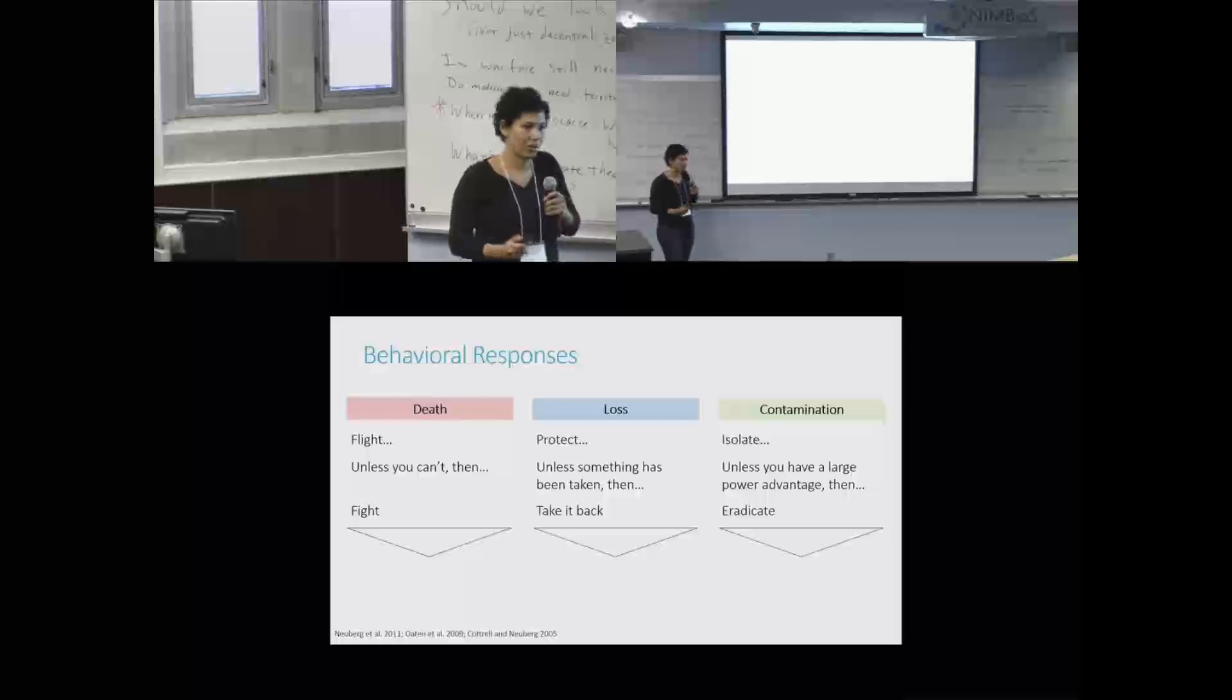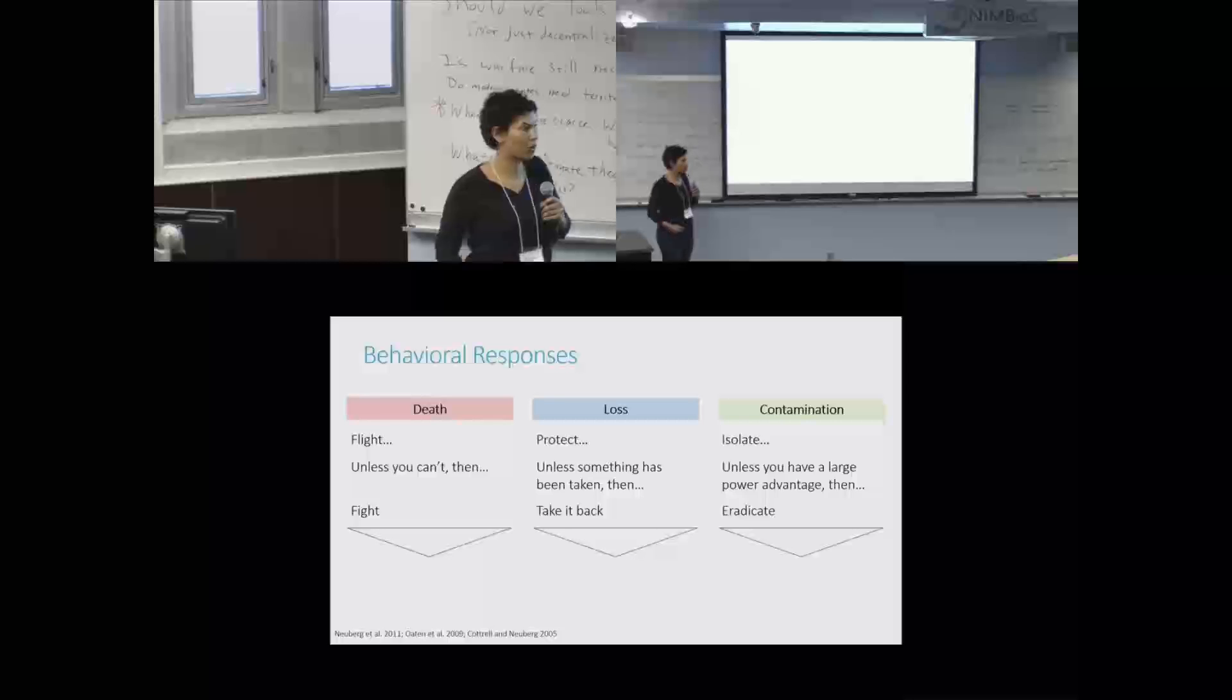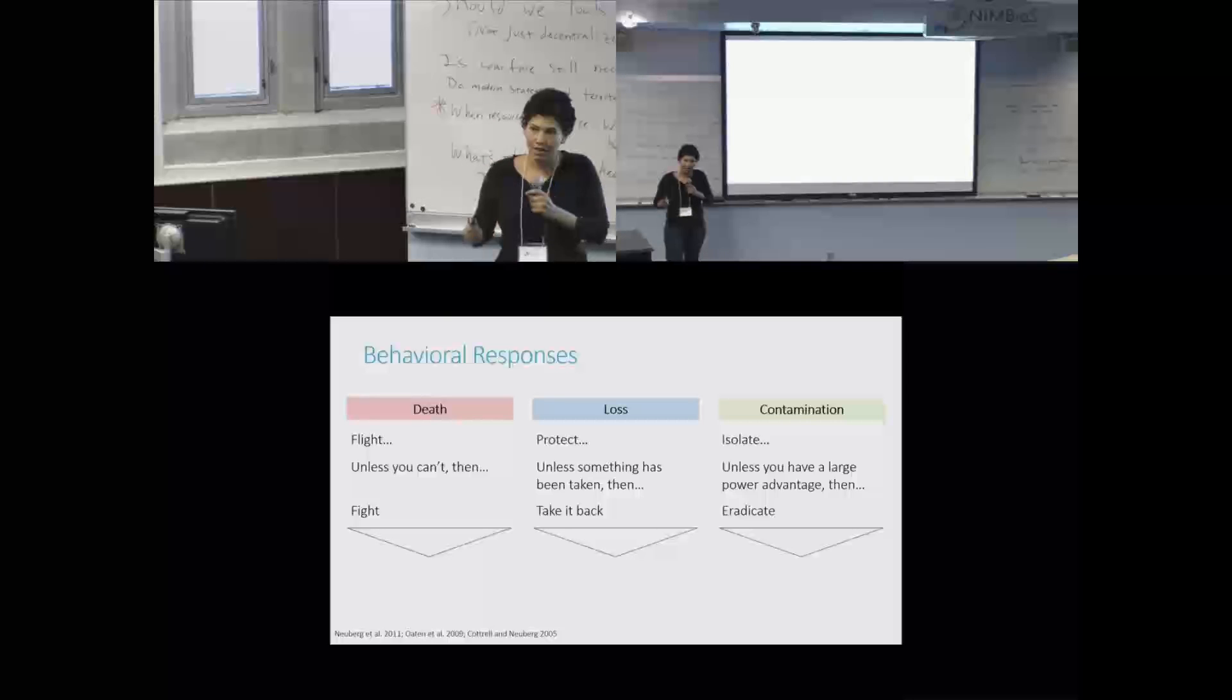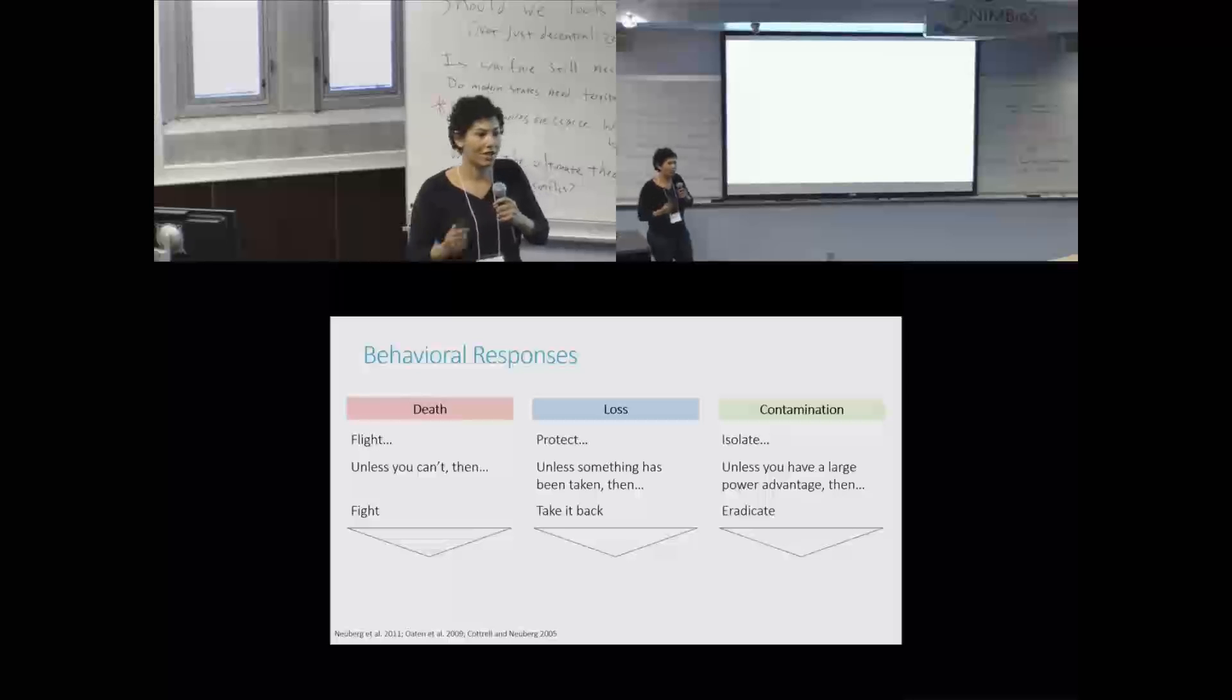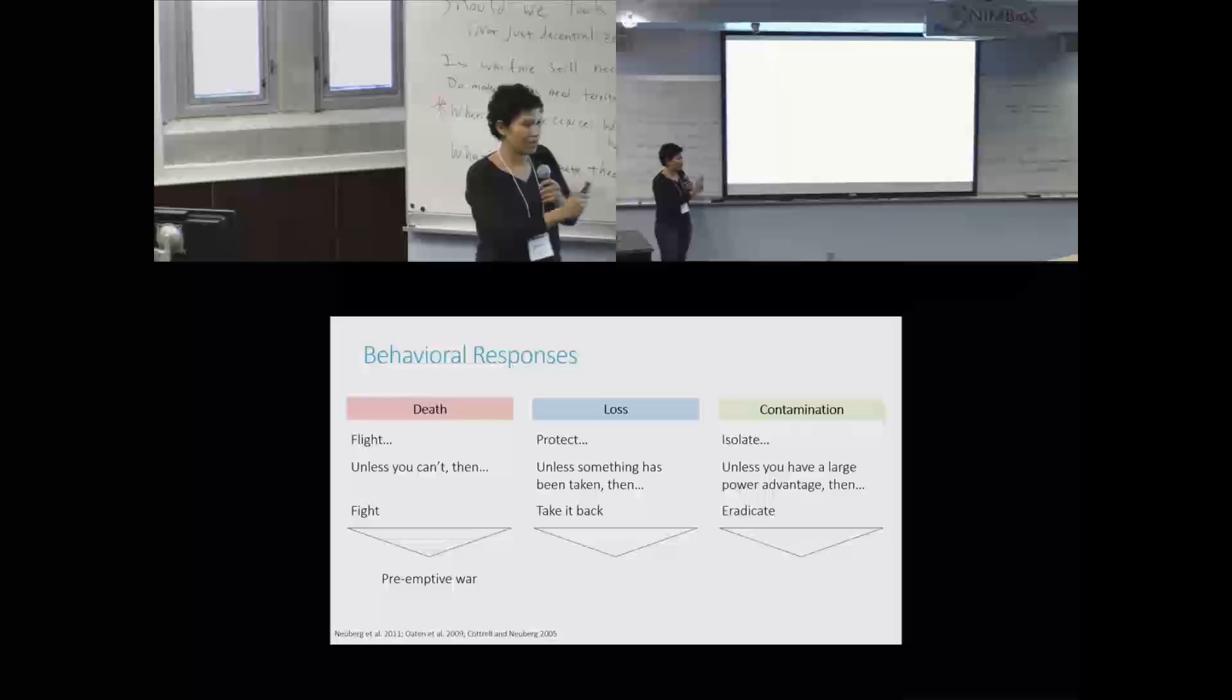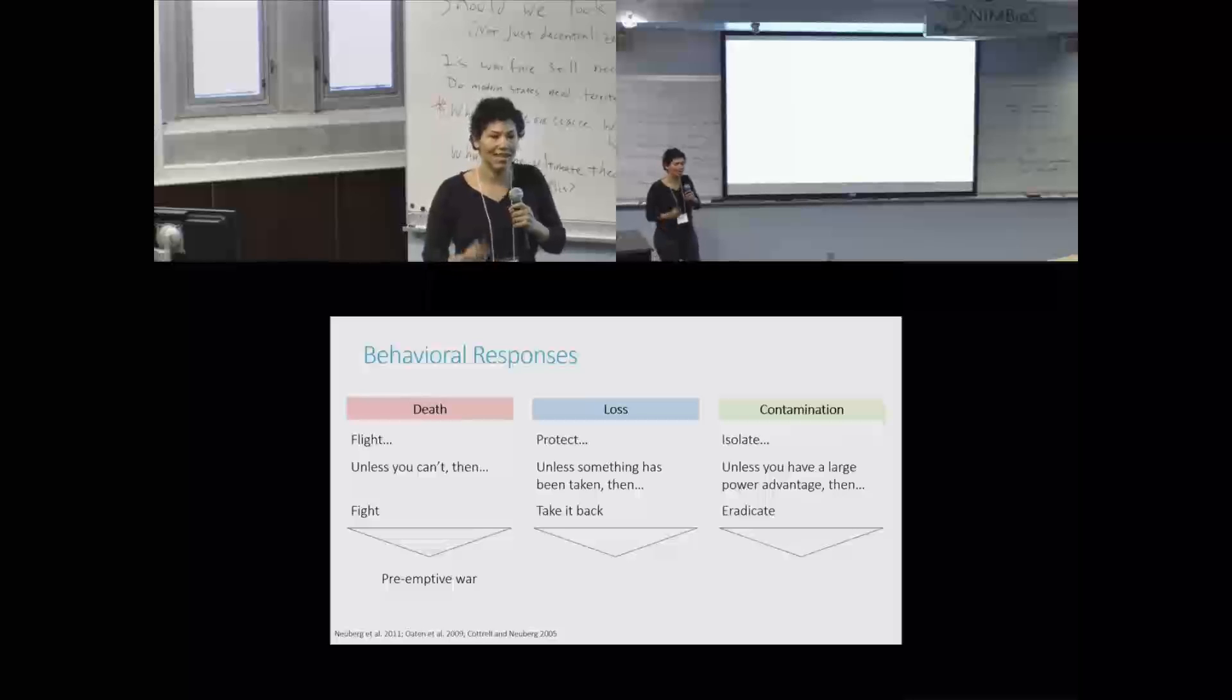So how does threat perception become a cause of war? Well, in each one of these three cases, if you're operating in these heuristics, preemptive aggressive action can make sense. So in this case, if you cannot flee and you think that some sort of attack is inevitable, fighting and moving first makes sense.